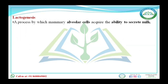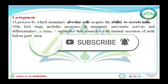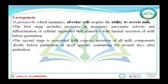Lactogenesis is the process by which mammary alveolar cells acquire the ability to secrete milk. The first stage includes enzymatic activity starting in the mammary gland, followed by differentiation of different cellular organelles present there. The second stage is associated with all the components present in the milk.